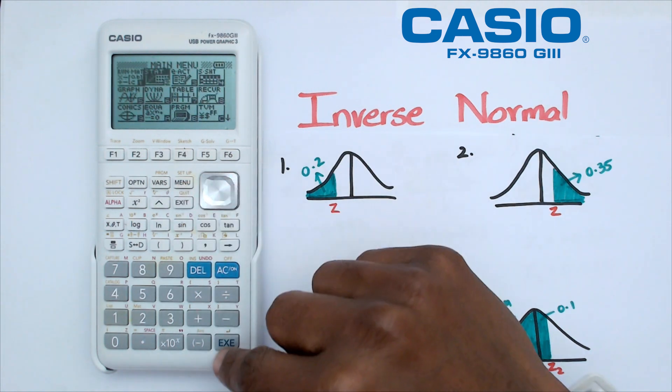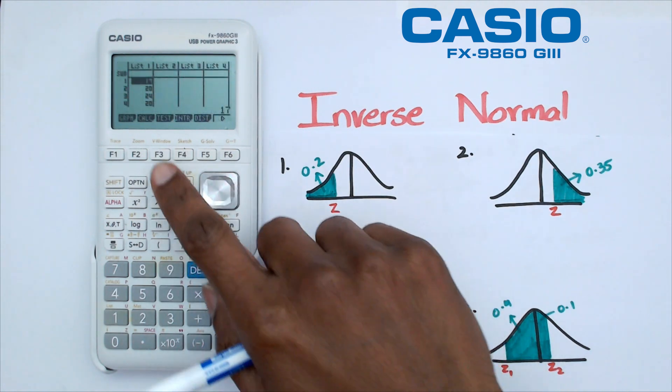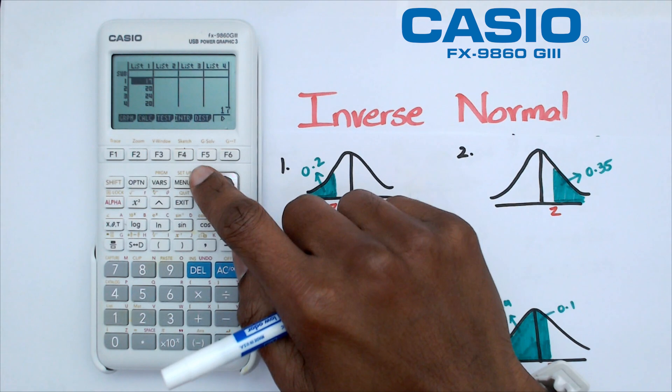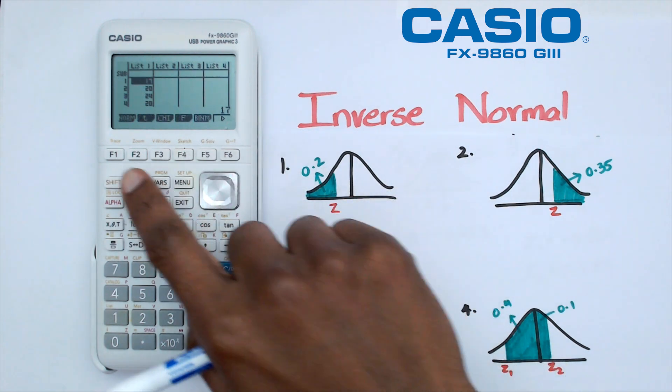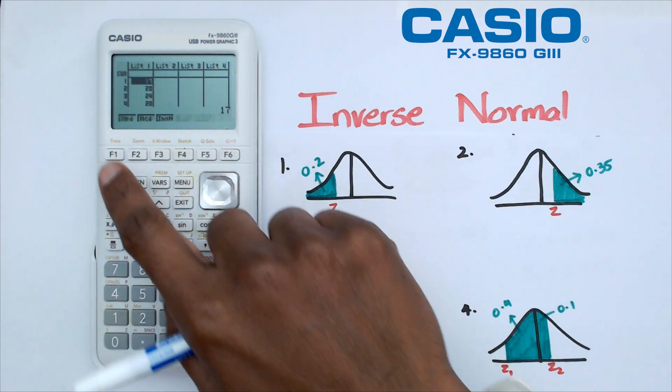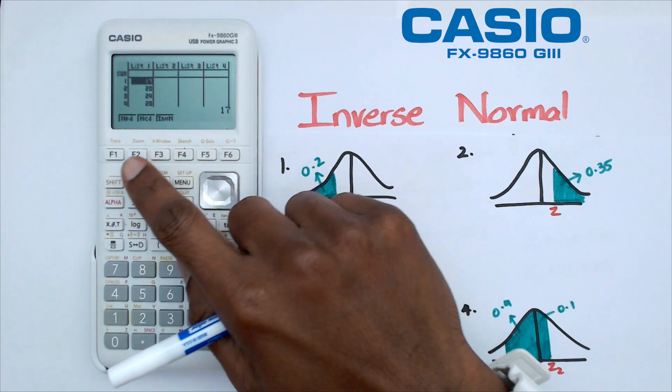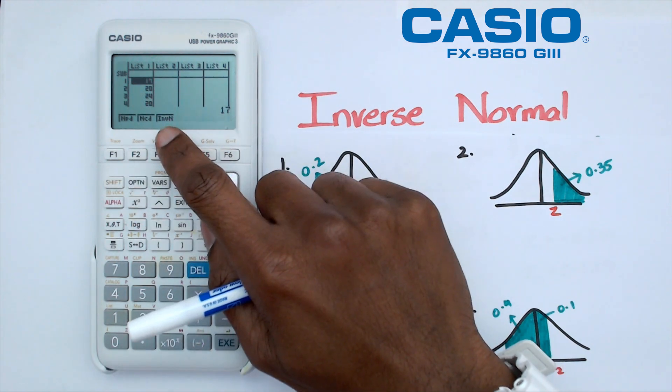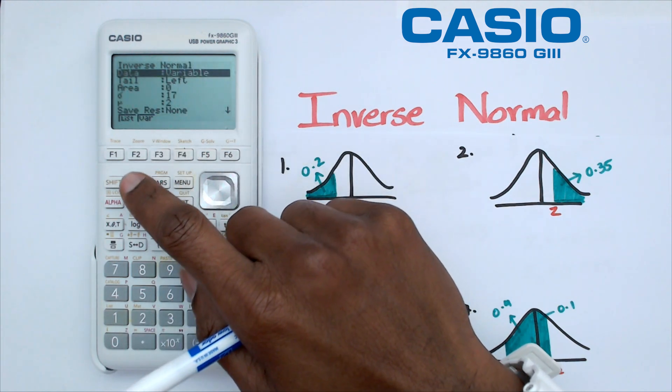Go to stat mode, and then under stat mode we're going to go into distributions, which is F5. We're going to click on F1 for normal, and once we're there we're going to click on inverse normal, which is F3.